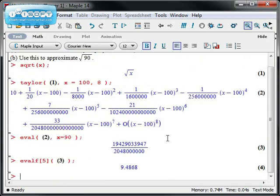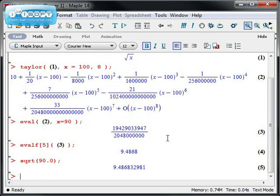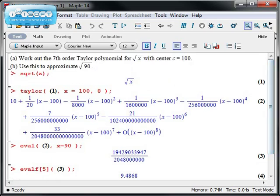For comparison purposes, the square root of 90.0 is approximately 9.48683. So we do have a fairly decent approximation. And that's the very basics of getting a hold of a Taylor series. You have the Taylor, series, and MTaylor commands.